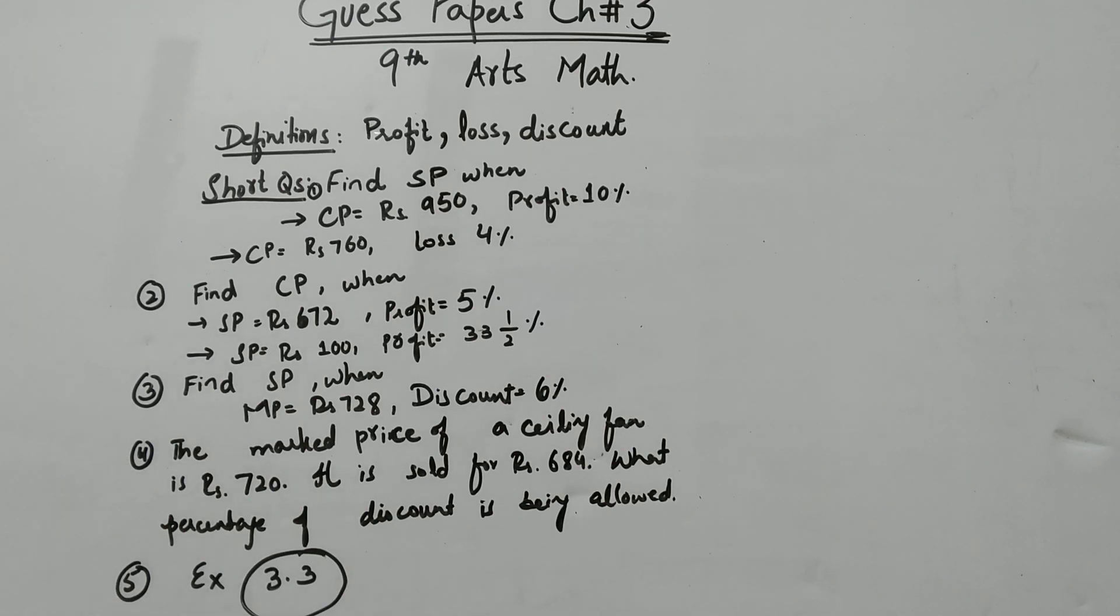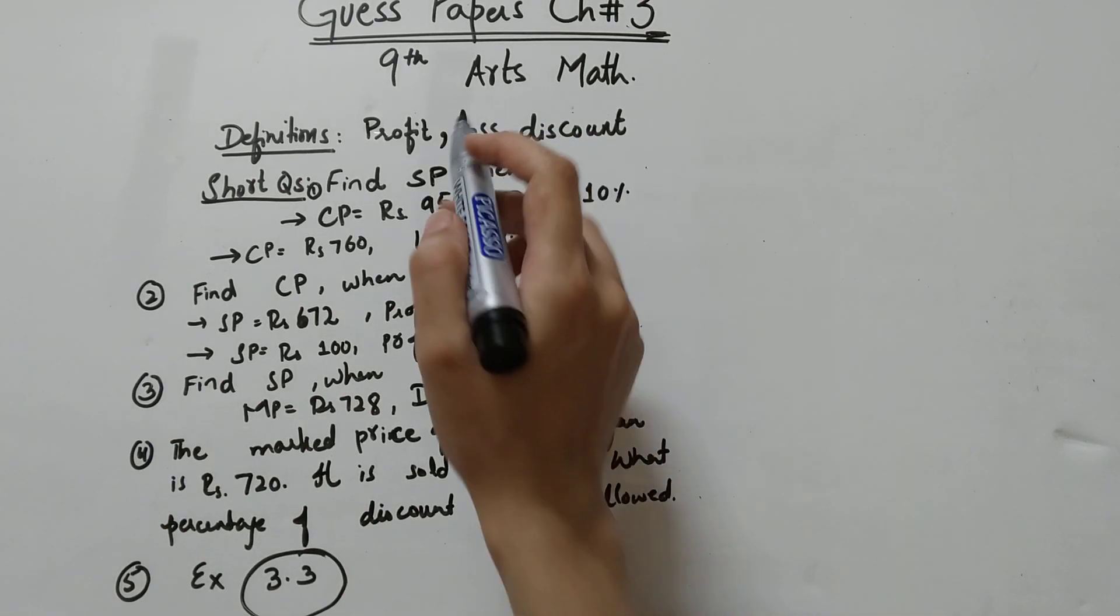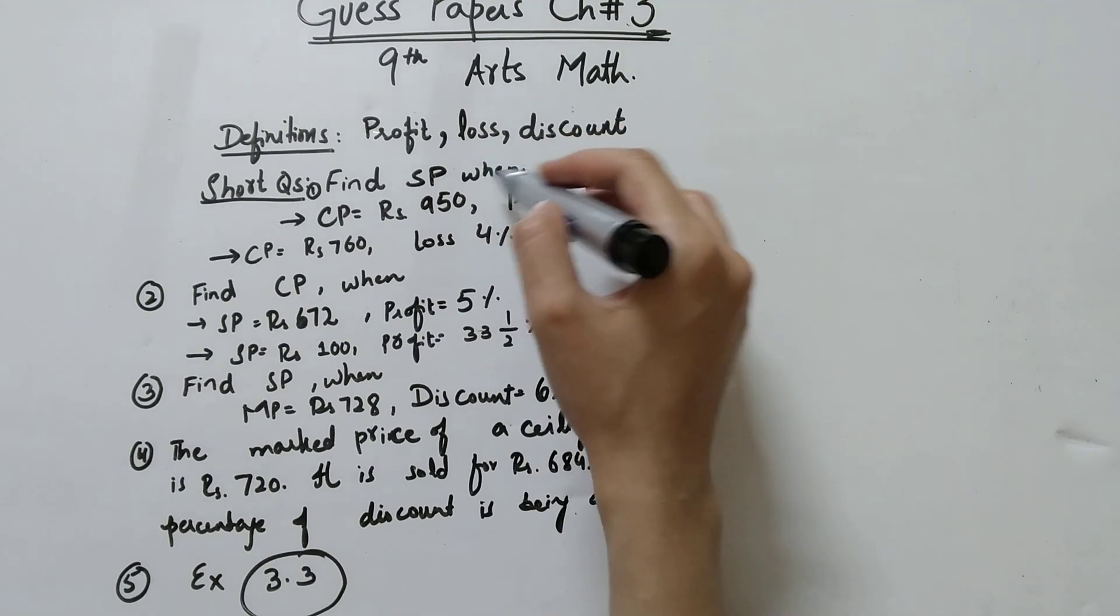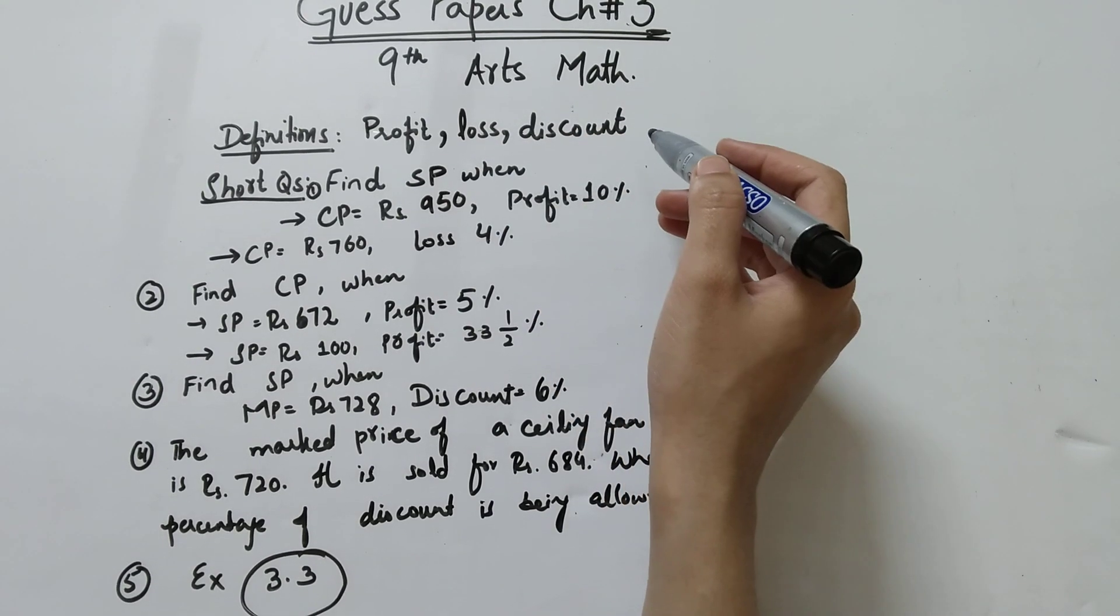Dear learners, the guest papers of chapter number 3 of 9th arts math is here. The definitions are profit, loss, discount—the main definitions.